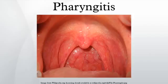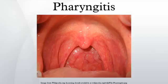Streptococcal pharyngitis, or strep throat, is caused by group A beta-hemolytic Streptococcus. It is the most common bacterial cause of pharyngitis. Common symptoms include fever, sore throat, and large lymph nodes. It is a contagious infection spread by close contact with an infected individual. A definitive diagnosis is made based on the results of a throat culture. Antibiotics are useful to both prevent complications and speed recovery.